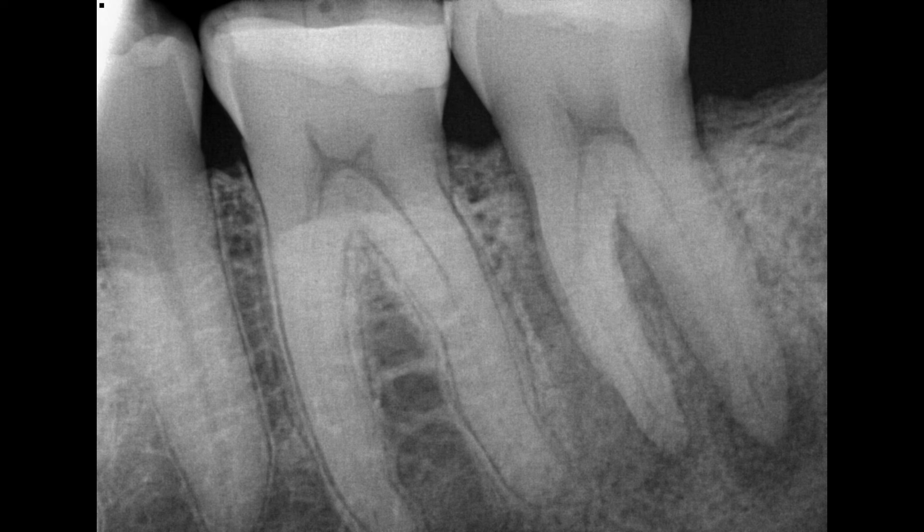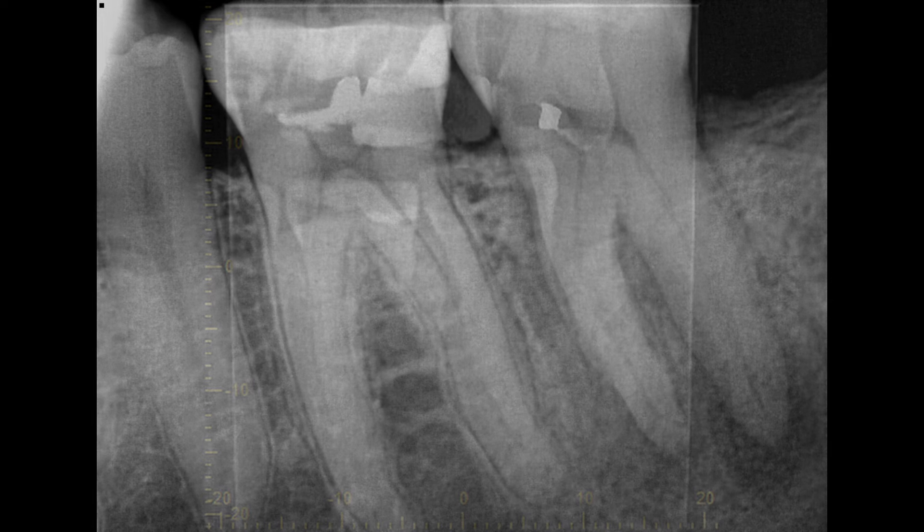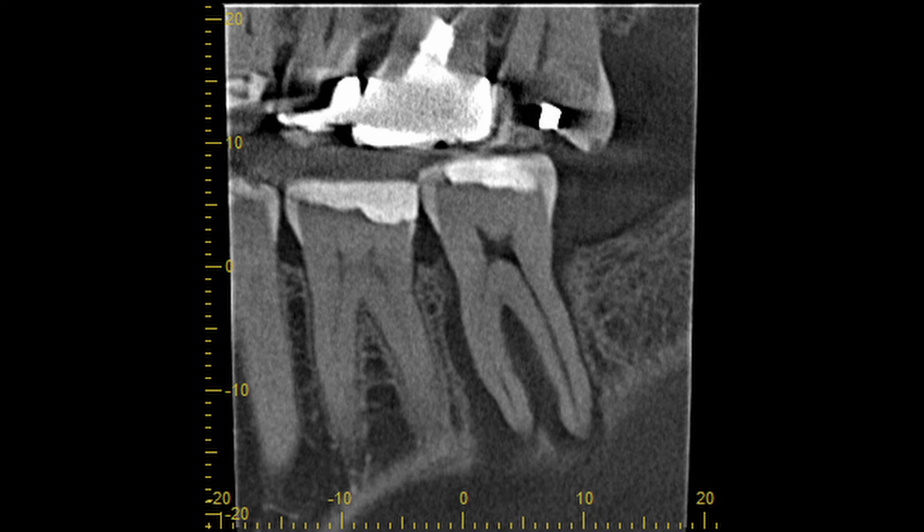You look at the PA here, you can see there's some infection and some bone loss. You look at the sagittal view of the CBCT, you can see there's massive bone loss, suspecting a fracture.